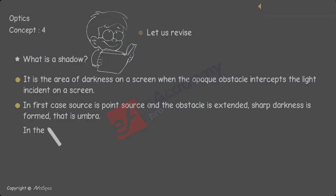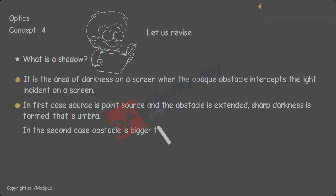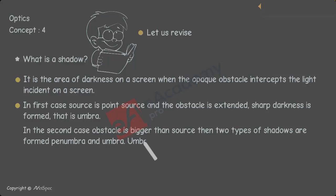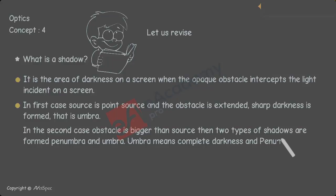In the second case, the obstacle is bigger than the source. Then two types of shadows are formed: penumbra and umbra. Umbra means complete darkness and penumbra means partial darkness.